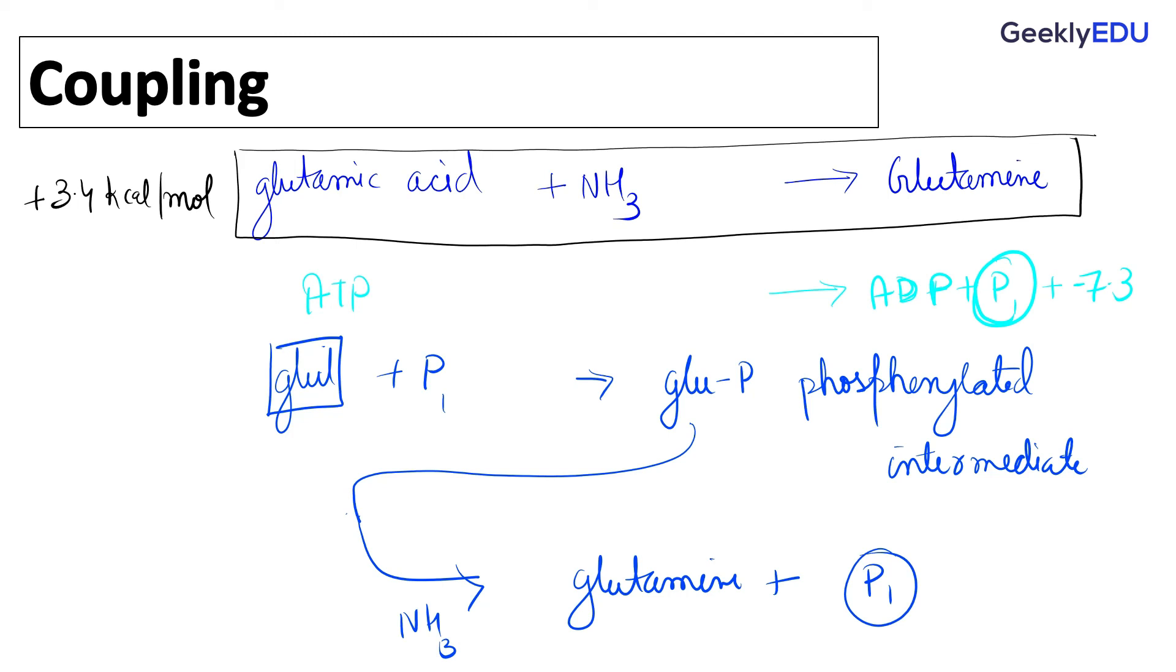So, did you get what you wanted? Yes, you have glutamine. And did you get the energy that you need? Yes, you wanted 3.4 kilocalories per mole, and that was available in the form of phosphorylation.